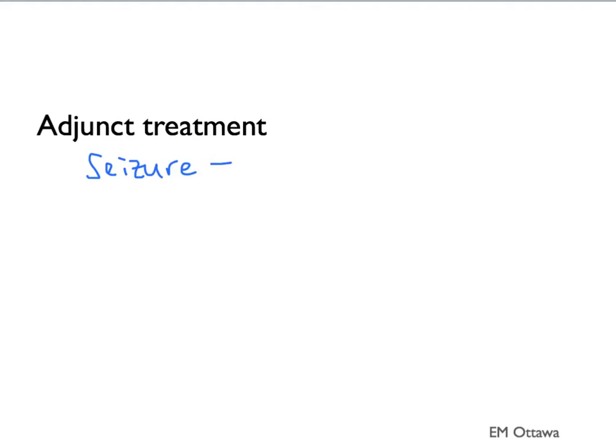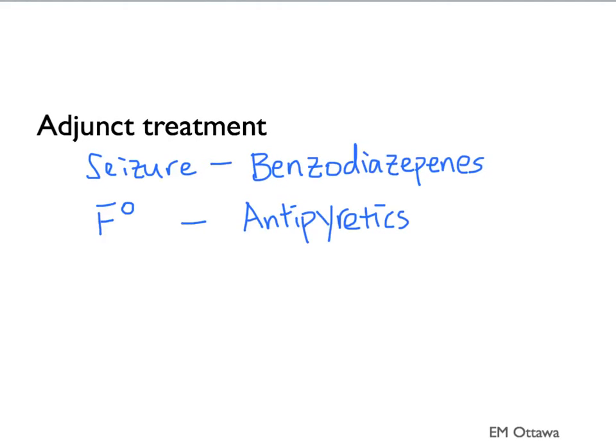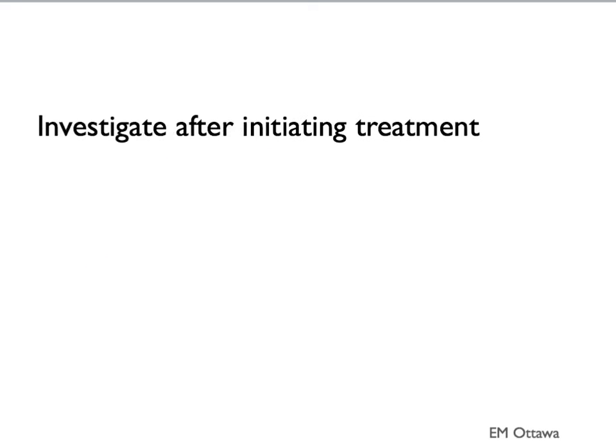There are also other adjunct treatments. For seizures, we often use benzodiazepines. For fever control, antipyretics. For patients with suspected bacterial meningitis, sometimes dexamethasone is given with the first dose of antibiotics — it is best to discuss with your staff. If you are suspicious that your patient might have meningitis or encephalitis, we would want to initiate treatment first, and then we will start to investigate.